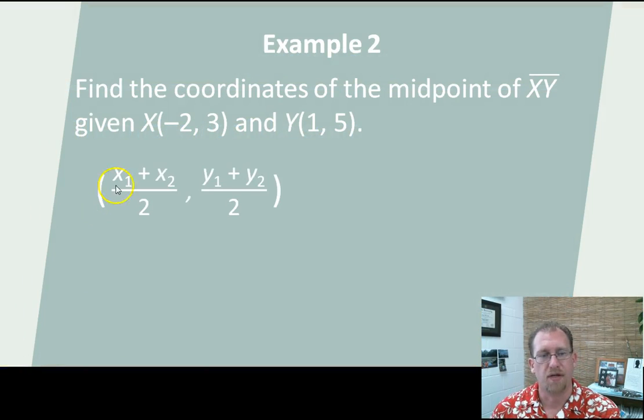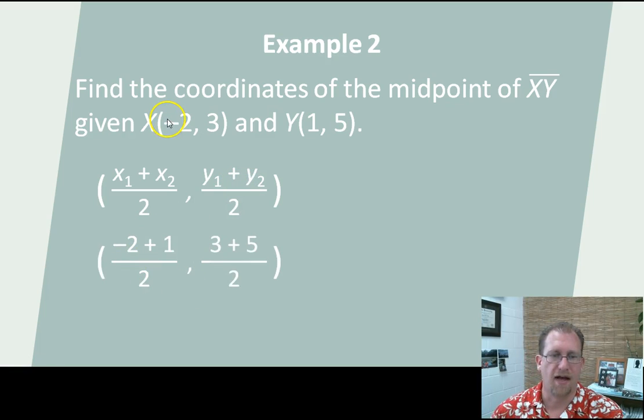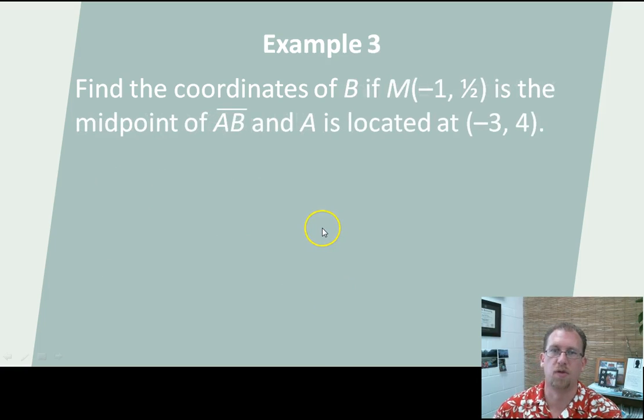Here's an example. Given that X is (-2, 3) and Y is (1, 5), what's the midpoint of the line segment bounded by those two points? So I have the average of the x's and the average of the y's. (-2 + 1) is -1, divided by 2 would be -1/2 or -0.5. Here I have 3 and 5, that's 8, divided by 2 is 4. So my coordinate is (-1/2, 4).